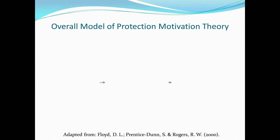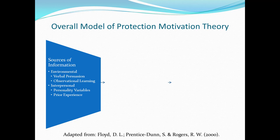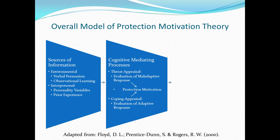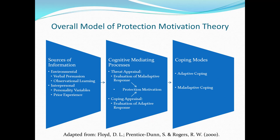As a visual example of how to conceptualize theories, we examine the health protection motivation theory. Sources of information begin the process and include environmental sources such as verbal persuasion and observational learning. Interpersonal components include personality variables and prior experience. Next come the cognitive mediating processes, which include threat appraisal — the evaluation of a maladaptive response — which can lead to protection motivation, as well as coping appraisal, the evaluation of an adaptive response.